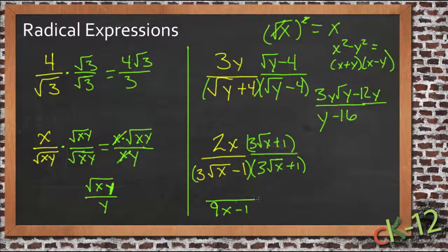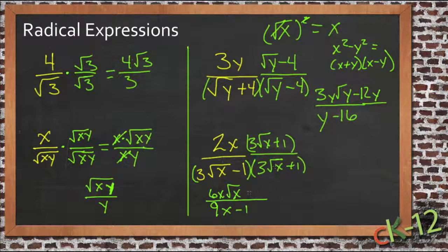And then in our numerator, we have 2x times 3 square roots of x, so we have 6x roots of x, and 2x times 1 is plus 2x, and that's it.